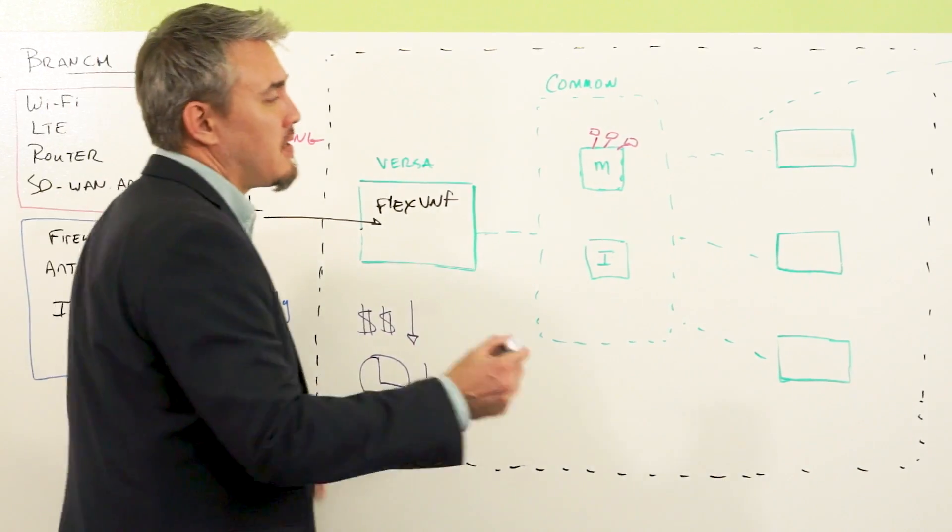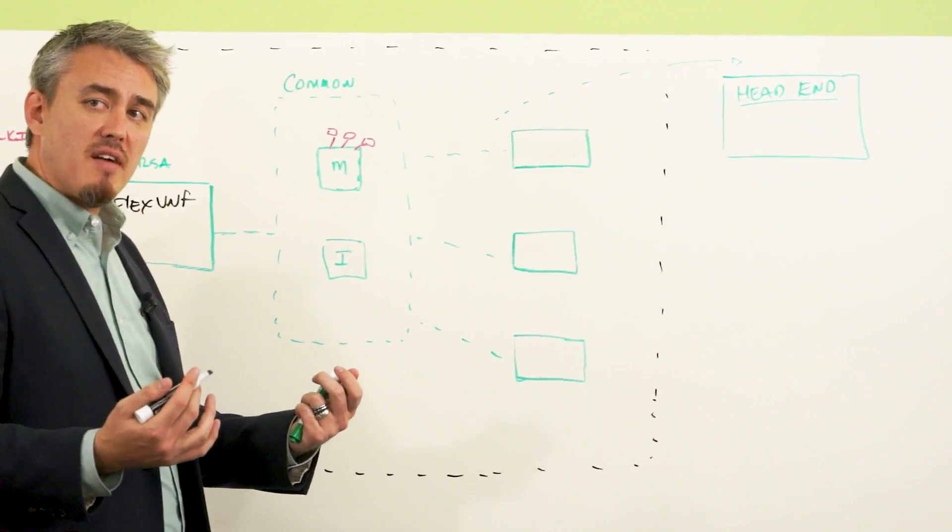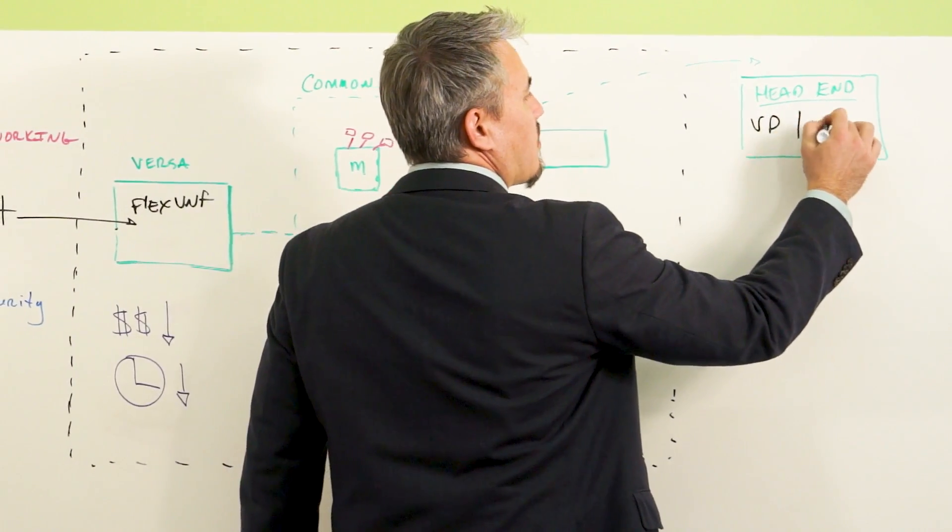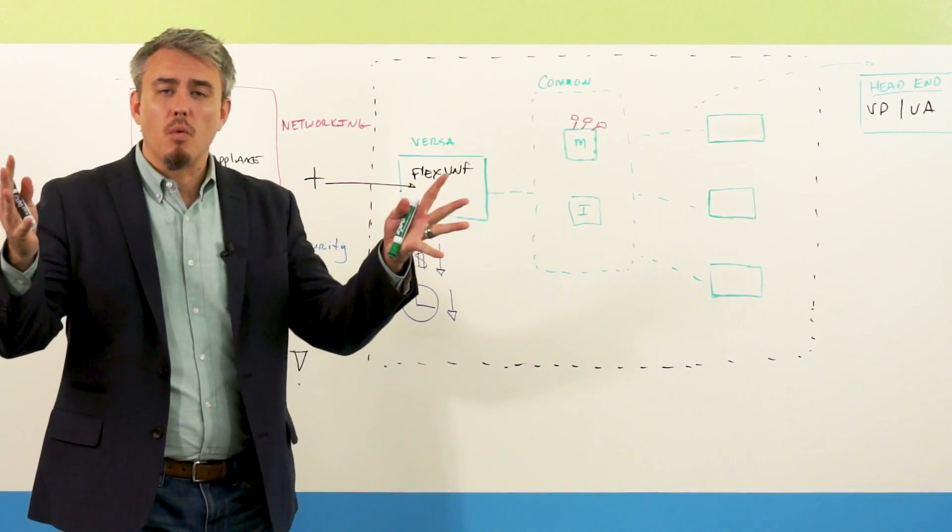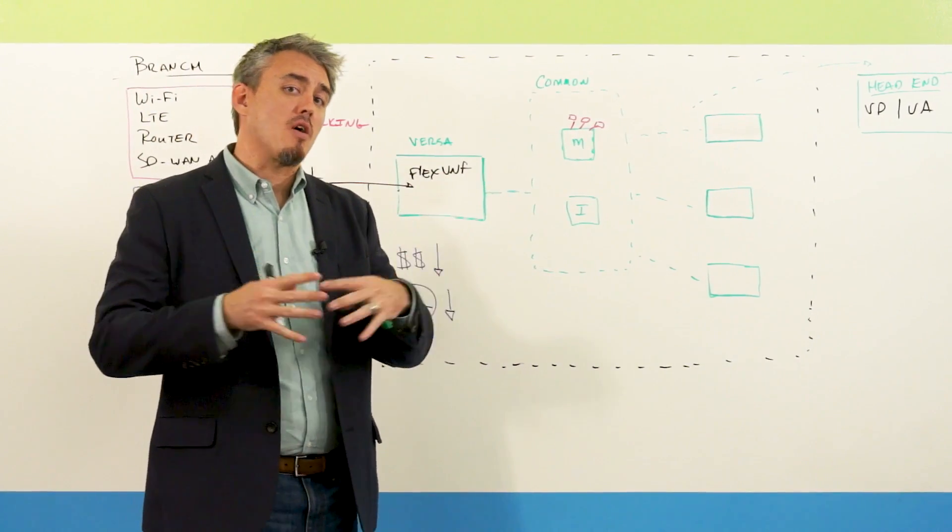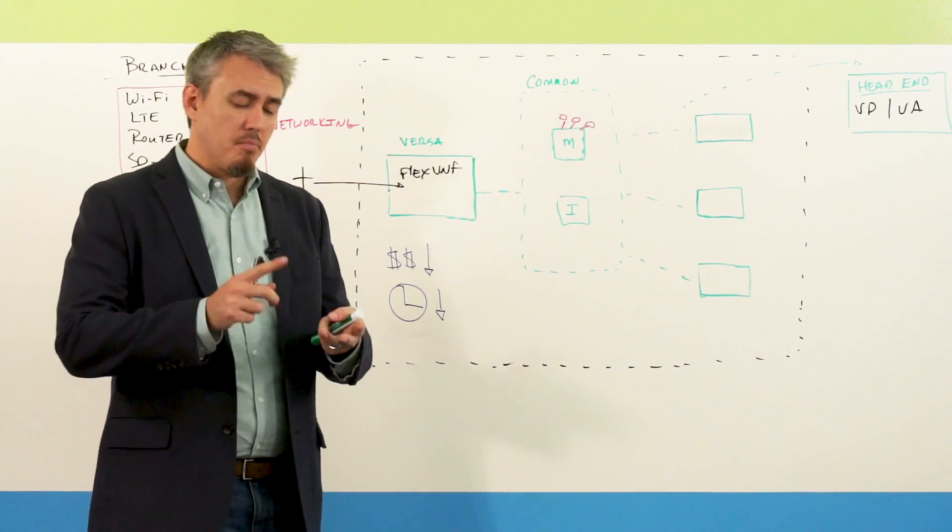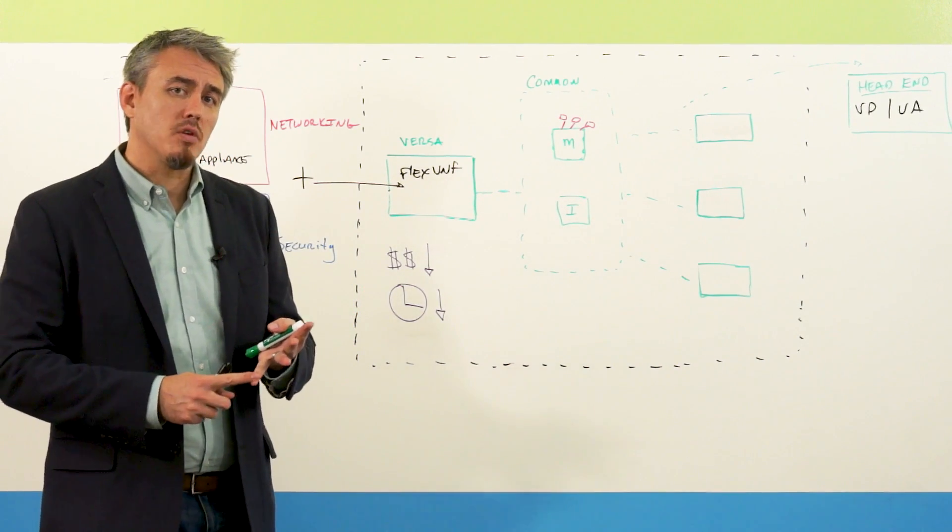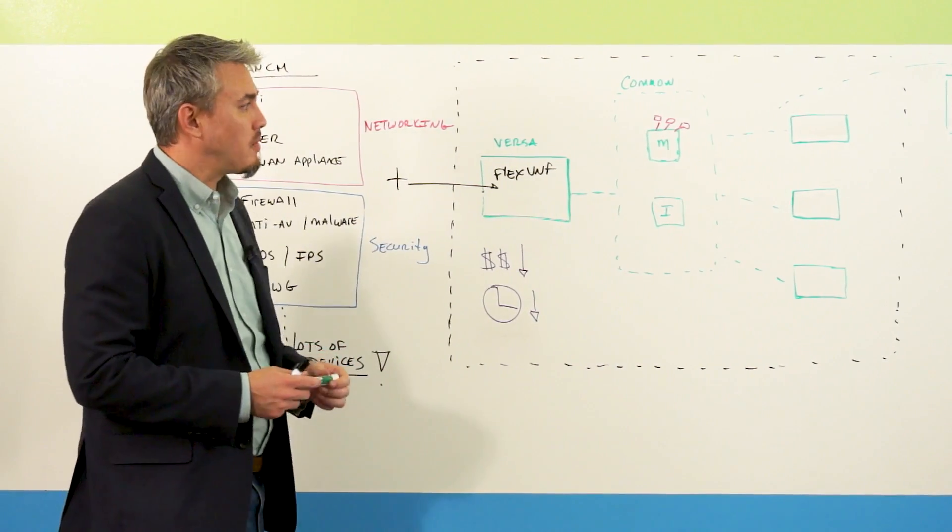But for Versa, all of this is managed in something inside of a head-end and with an application or a management platform called Versa Director and Analytics, which I'll just simplify with a VD as well as a VA. This provides your window into the software-defined world or into our secure SD-WAN world where you get monitoring, policy, provisioning, event correlation for both networking as well as security.